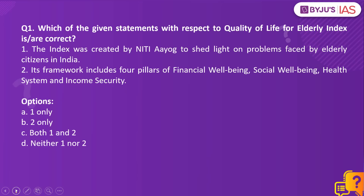Which of the given statements with respect to the Quality of Life for Elderly Index is or are correct? The index was created by Niti Aayog to shed light on the problems faced by the elderly citizens in India. Its framework includes four pillars of financial well-being, social well-being, health system and income security.